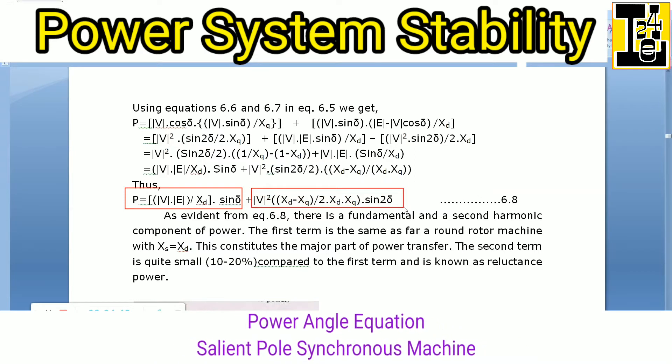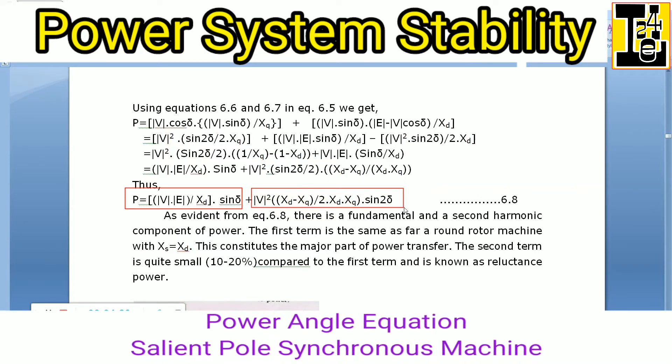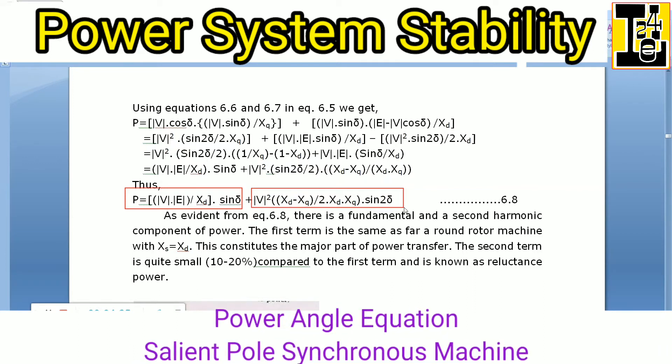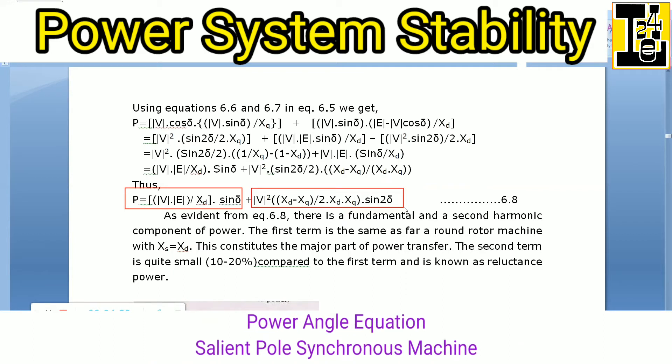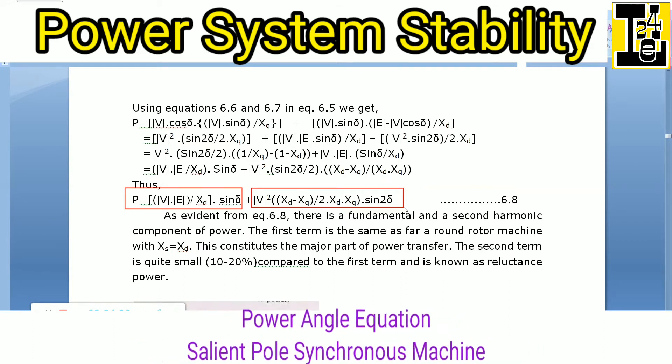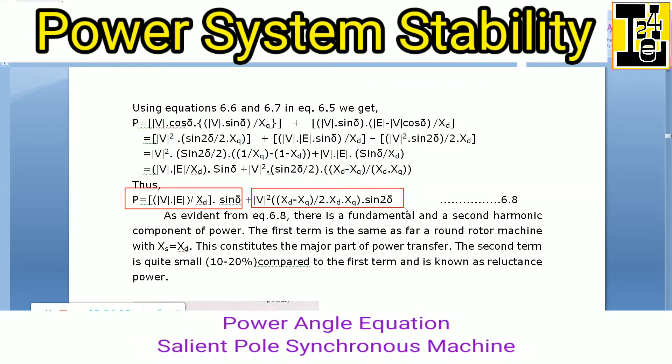The second term, V²[(Xd - Xq)/(2XdXq)] sin 2δ, is quite small, about 10 to 20 percent compared to the first term, and is known as reluctance power.